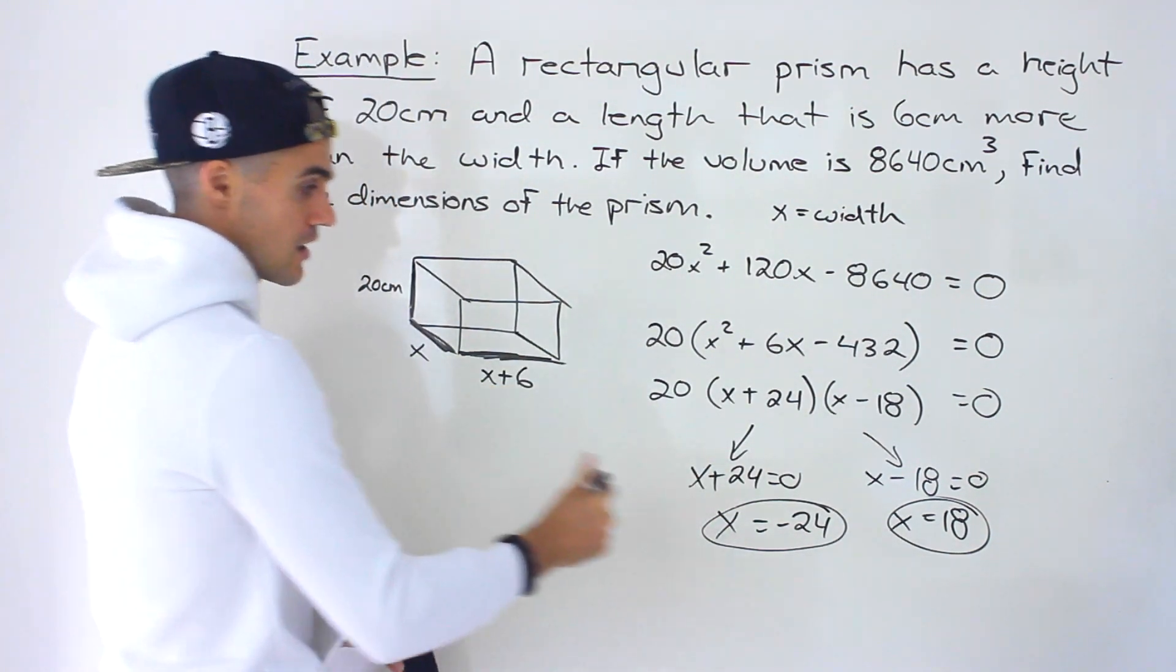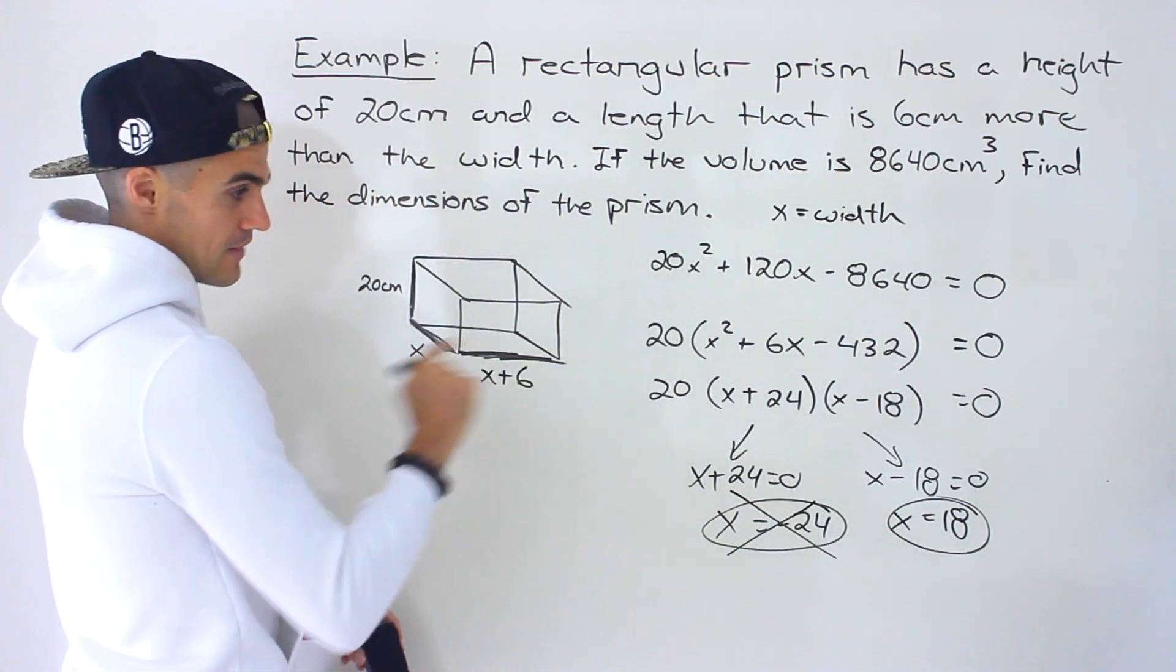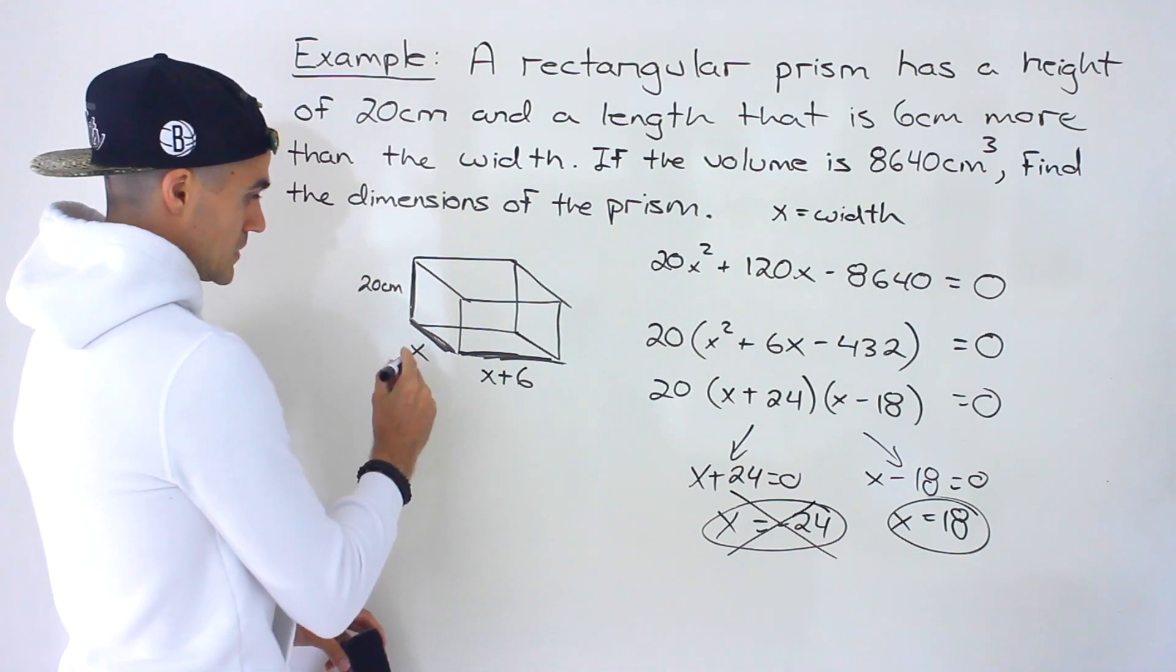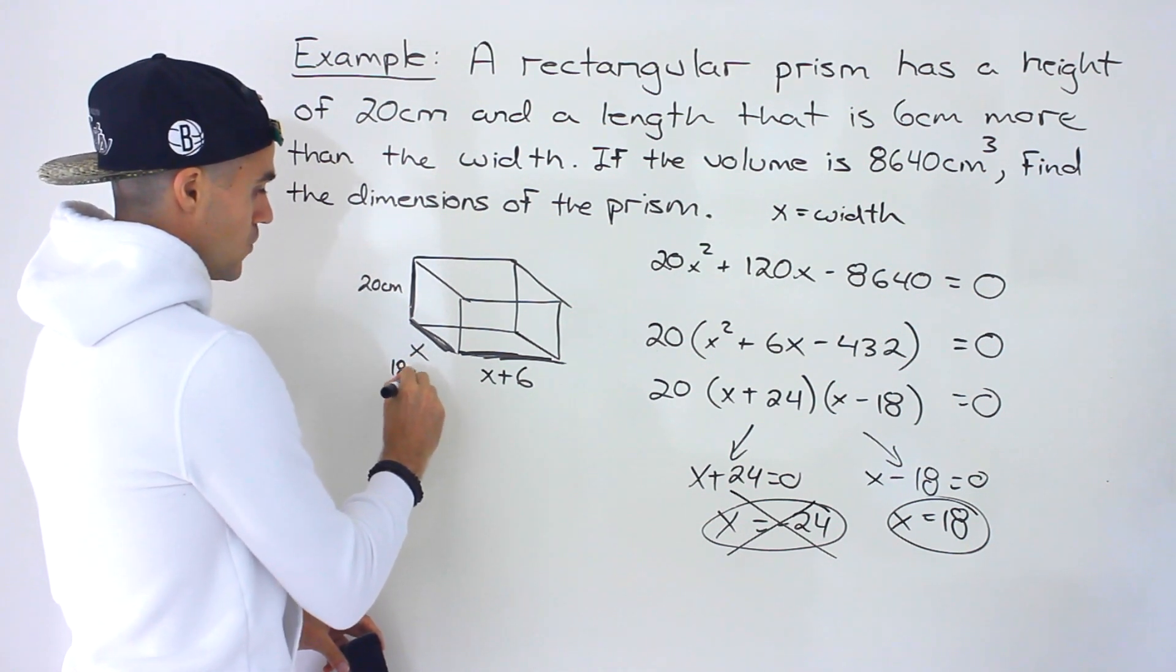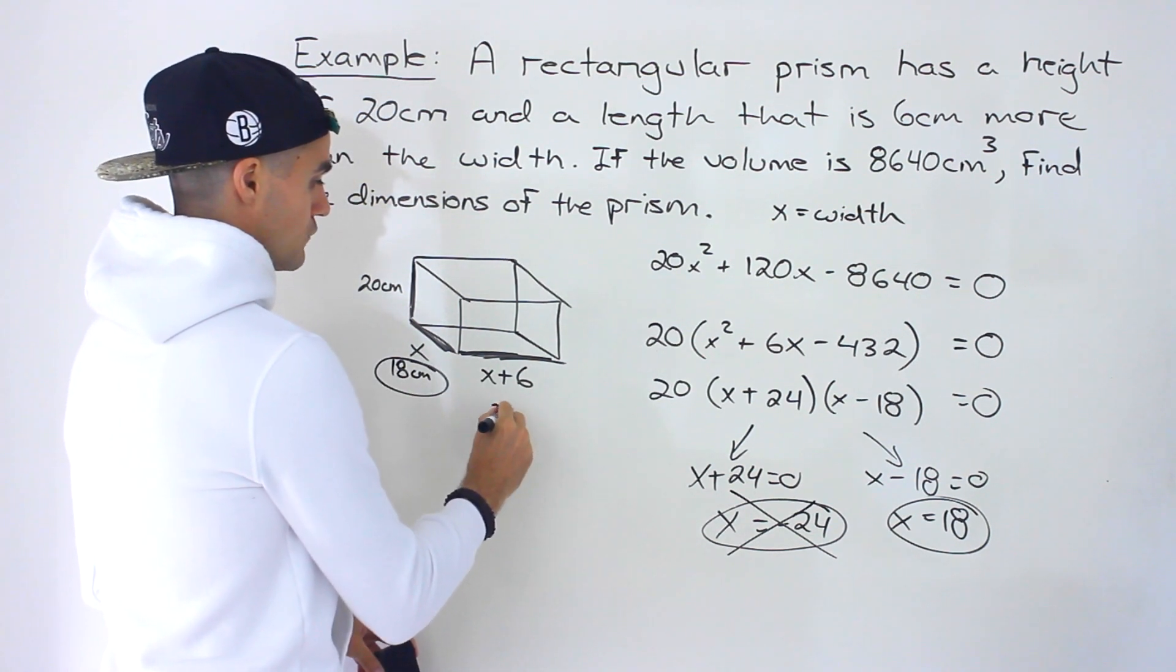In this abstract quadratic equation, that is one of the solutions. But when you relate it to the actual word problem you're dealing with, it's not. So this negative 24, we would take out. And then we have that x value of 18. Notice with that, we'd have a width of 18 centimeters and then a length of 24 centimeters.